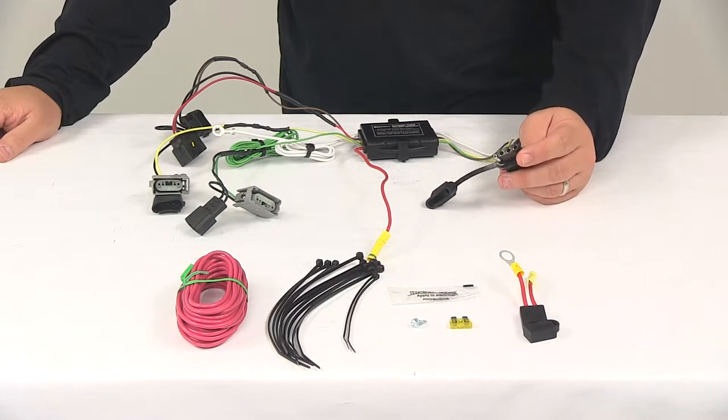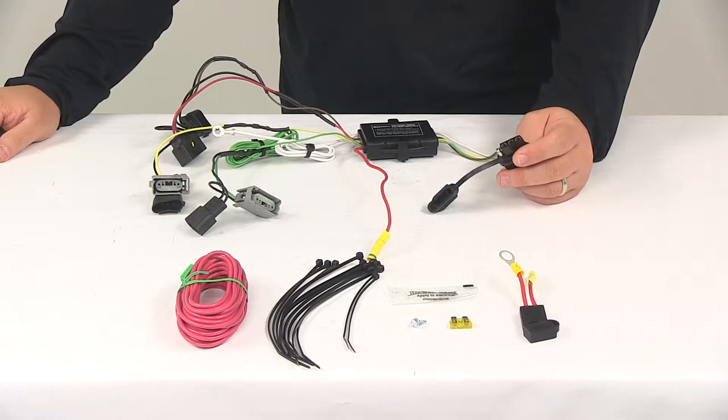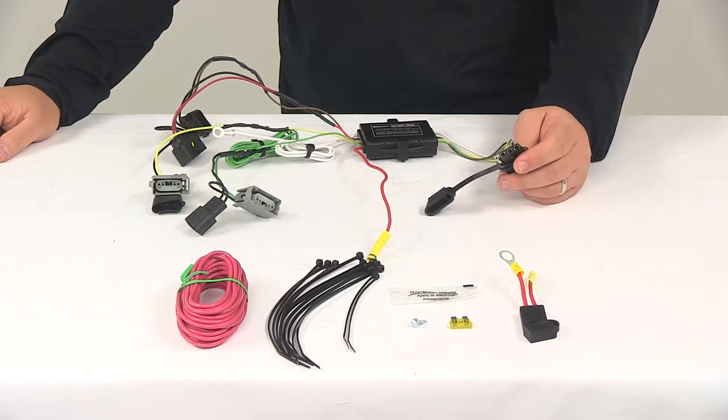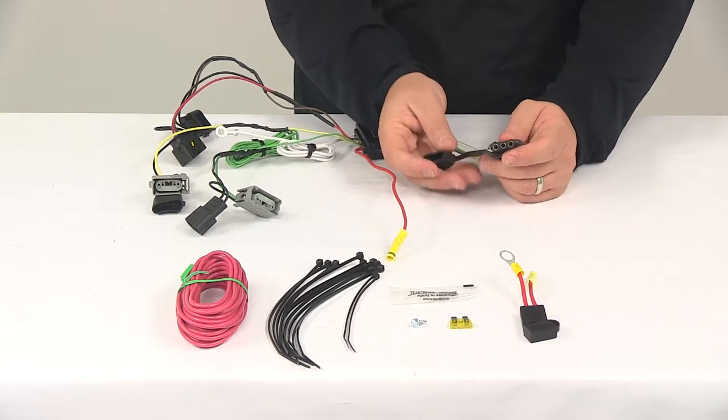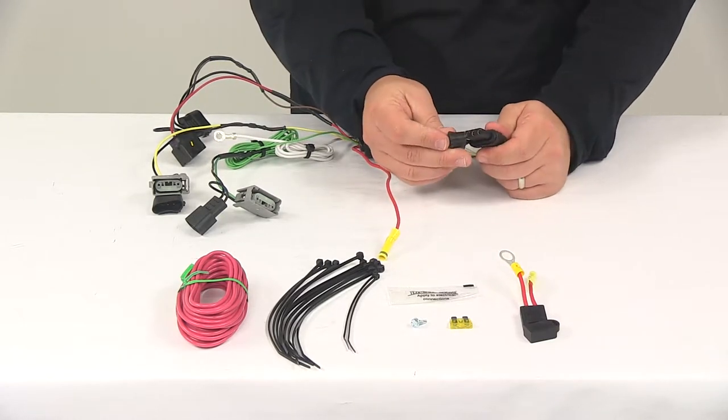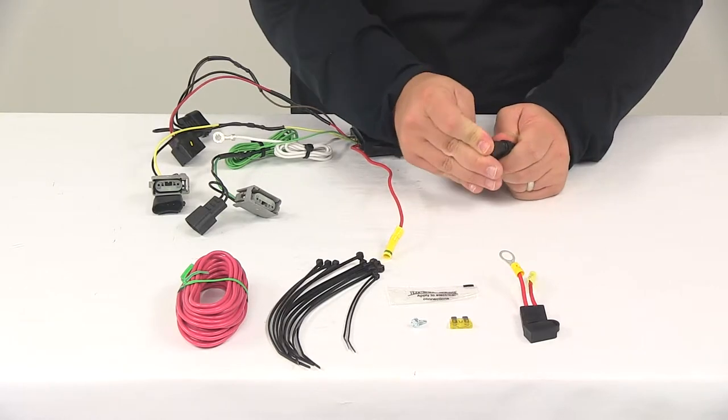It's going to provide a four-way flat connector at the back of your vehicle to power your trailer signal lights. This is compatible with five-pole, six-pole, and seven-pole adapters. Adapters are sold separately. And it's going to come with a dust cap for the four-way flat connector. That way you can cover up the connection points whenever your plug's not being used.